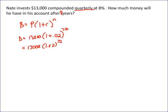So it's going to be 13,000 times 1.02 raised to the 32nd power equals 24,499 and rounded to three cents. And that's your answer. That's how much money is in his account after eight years.